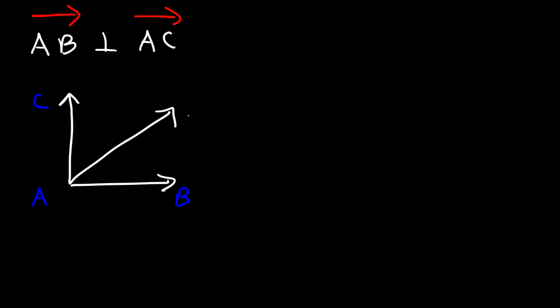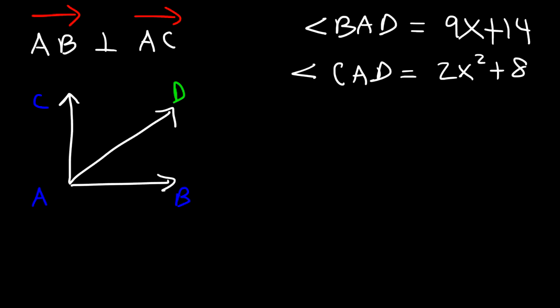Now let's work on a practice problem. Let's say that ray AB is perpendicular to ray AC, where A is the vertex. So this is A, B, and C. And there's another ray that splits angle CAB. Let's call it ray AD. Now let's say if angle BAD is equal to 9x plus 14, and if angle CAD is equal to 2x squared plus 8. What is the measure of angle CAB?